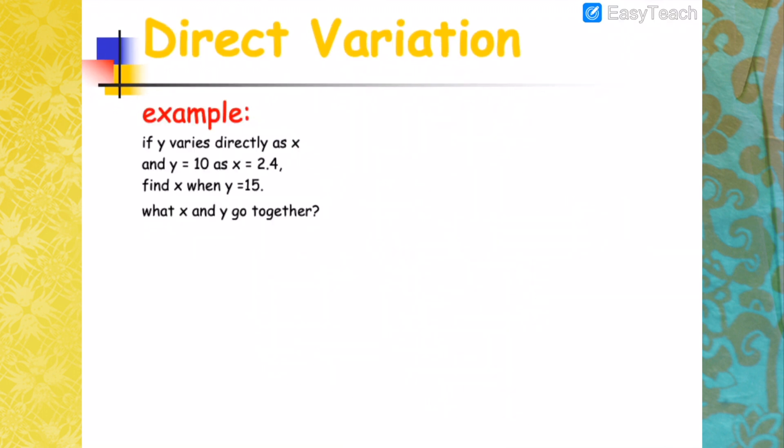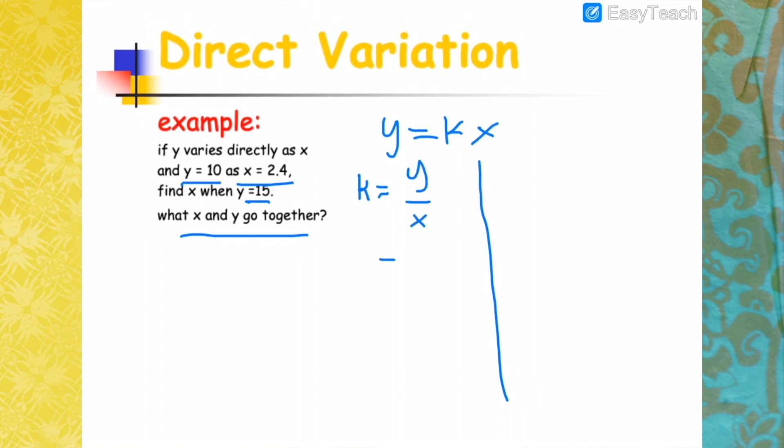Let's take this as an example. If Y varies directly as X and Y equals 10 as X equals 2.4, find X when Y is 15. So what X and Y go together? So this will be Y varies directly as X. You have two ways to do this. You could first find the constant K. That will be Y over X. So you substitute the first given. You have 10 over 2.4 so that you will find your K. So that could be your first step.